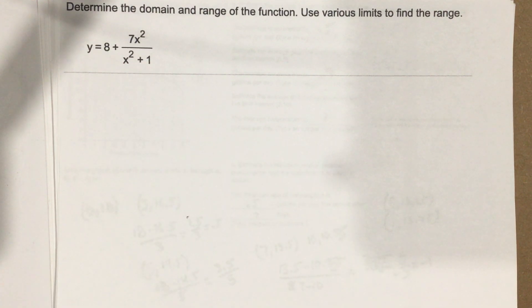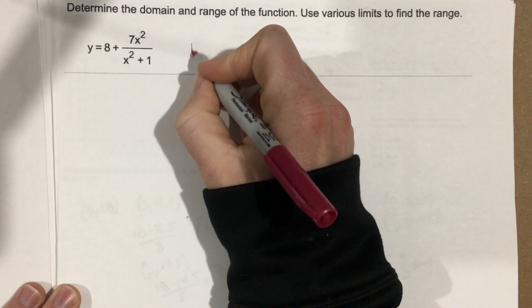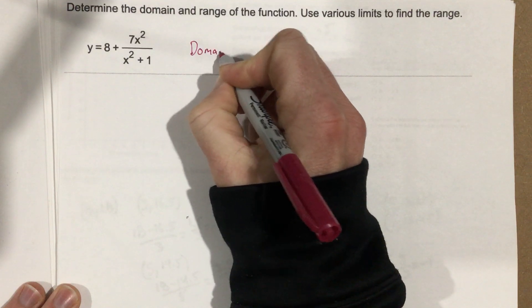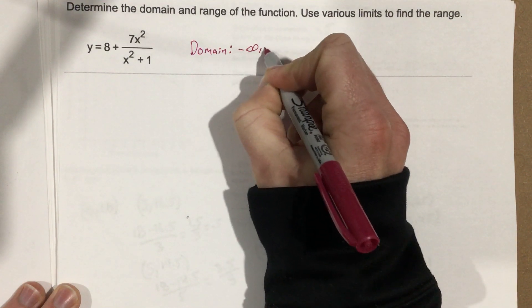We can essentially plug in any number we want for x and we're never going to get division by 0 in the denominator. So our domain is simply any number between negative infinity and infinity.